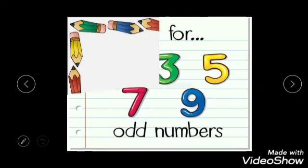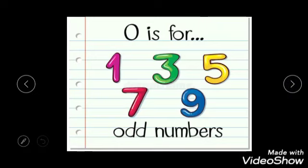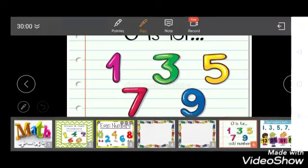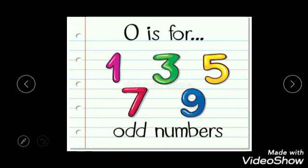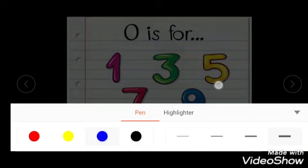Now we will move to odd numbers. 1, 3, 5, 7, and 9. Whichever numbers end in these numbers, what kind of number are they? Odd numbers. 1, 3, 5, 7, and 9. Or we can also say that numbers which do not come in the 2's table. Let me tell you a small trick.